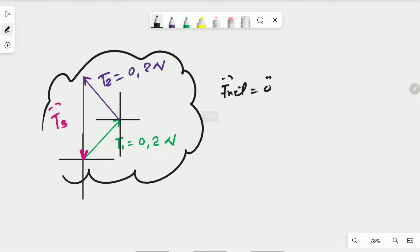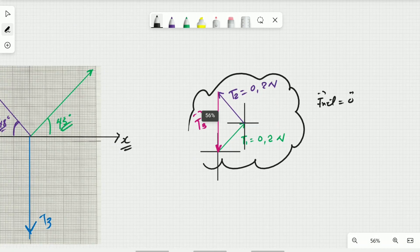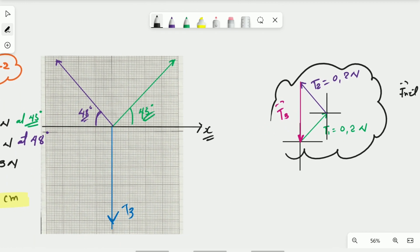So now we can see that these three vectors at equilibrium end up in a closed system or closed triangle.